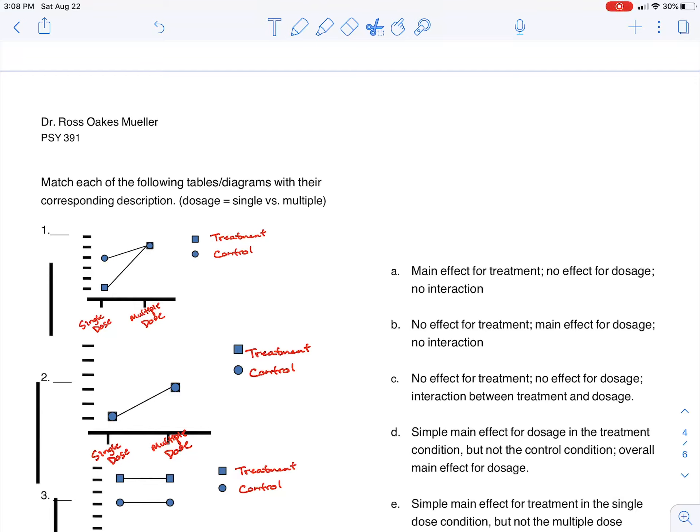Alright, for this last part of the worksheet, what I've given you is data from a couple different factorial experiments. I can't remember if your actual worksheet has these written in. The version I had here did not have treatment and control and single dose and multiple dose in there. What I've gone through is I've labeled those.